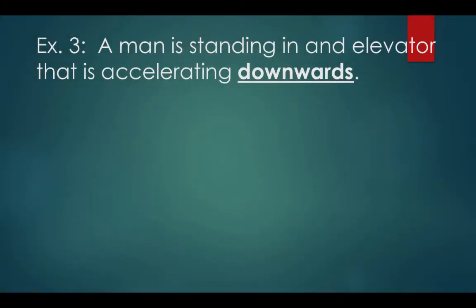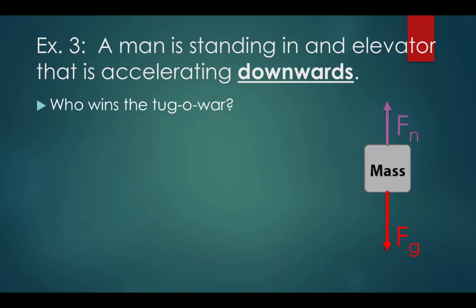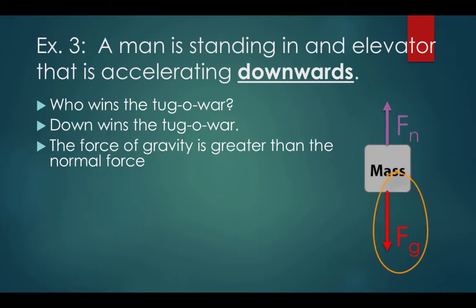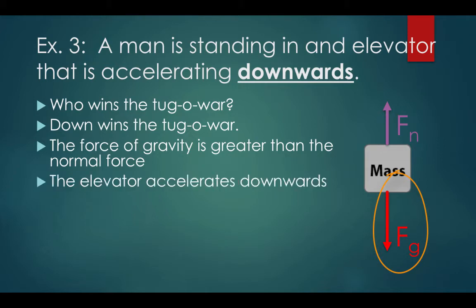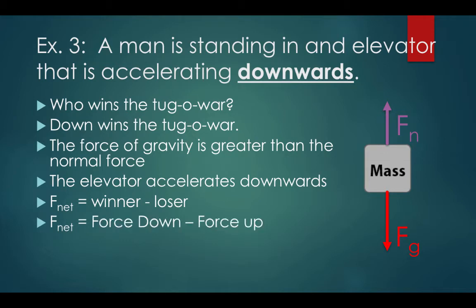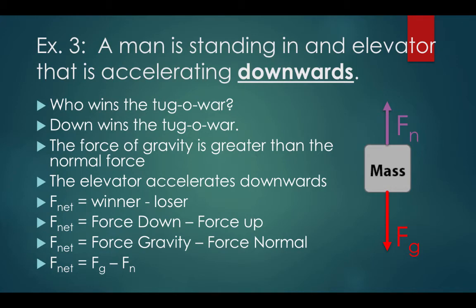Example number three: a man is standing in an elevator that is accelerating downwards. Here's a free body diagram. Who wins the tug-of-war? Down wins — the force of gravity is greater than the normal force, so the elevator accelerates downwards. Fnet equals winner minus loser, so force down is the winner: Fnet equals force down minus force up. Fnet equals force of gravity minus force normal, or Fnet equals Fg minus Fn.